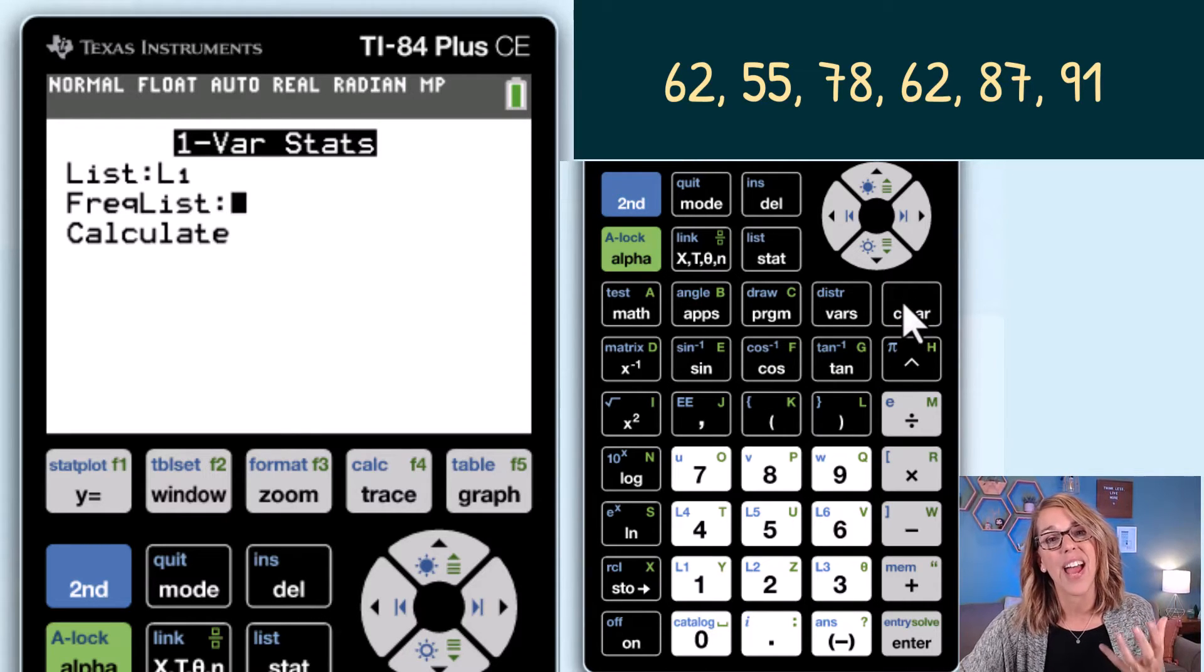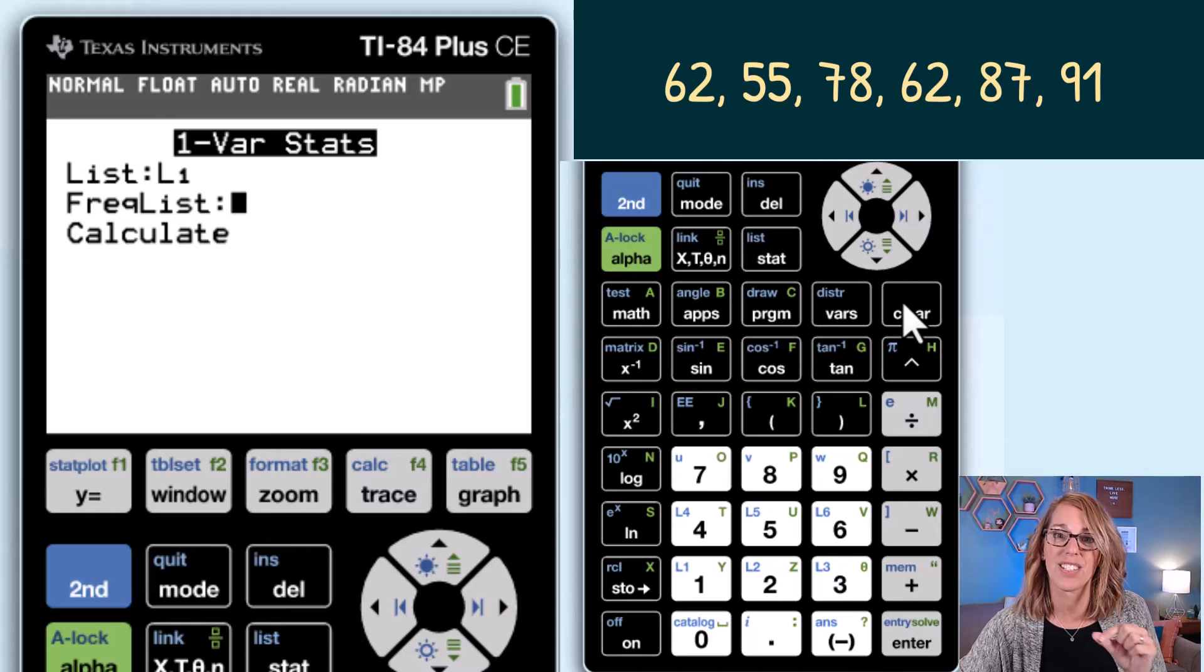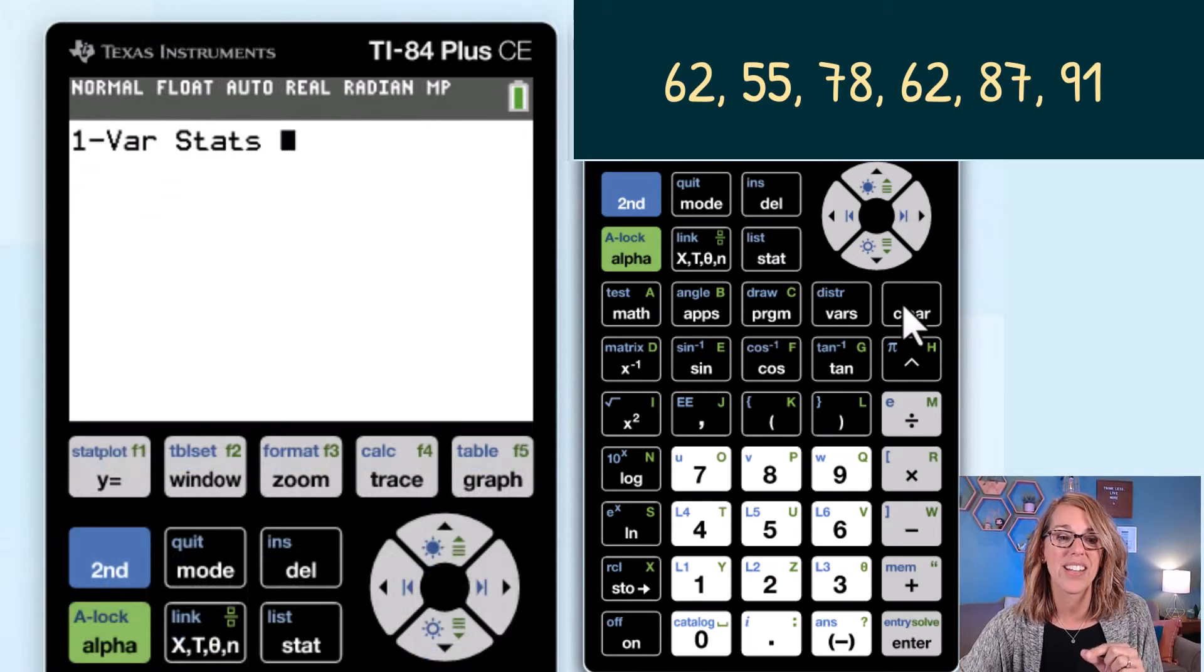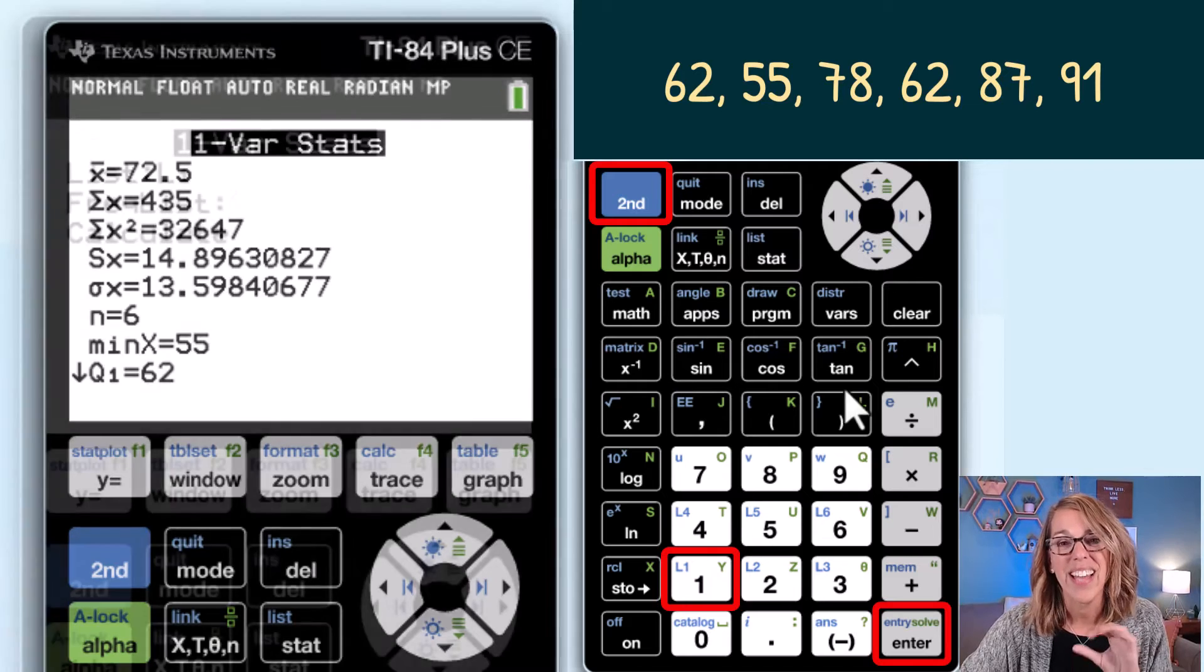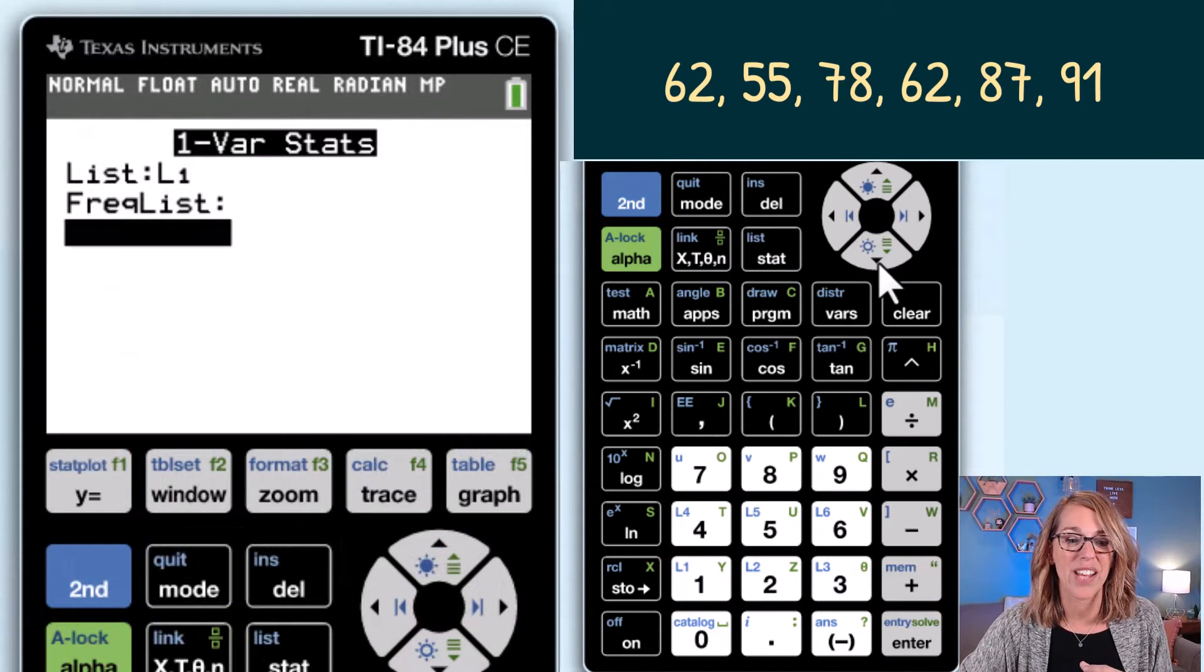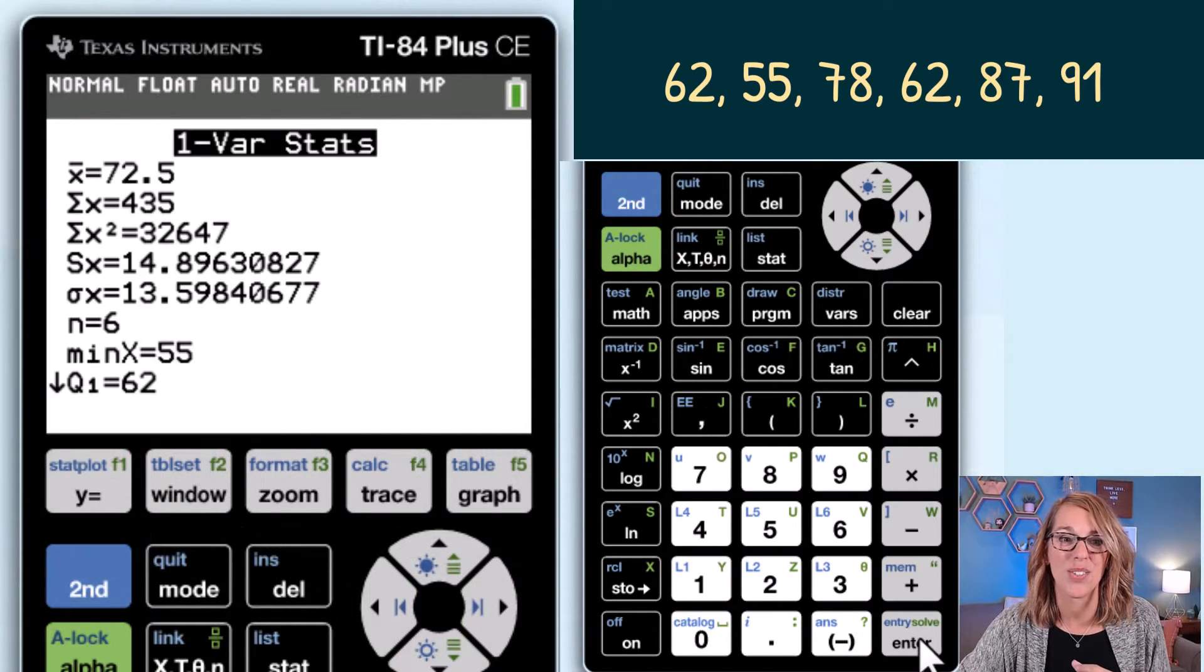If your calculator happens to look a little bit different and looks like this you're going to go ahead and click second L1 and then enter. On my calculator I'm going to arrow down and then click enter to calculate.